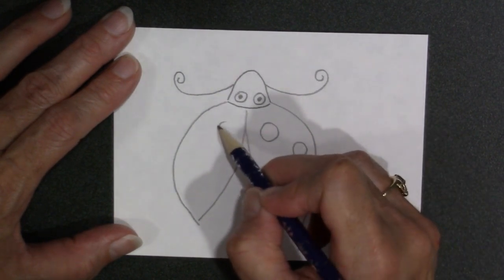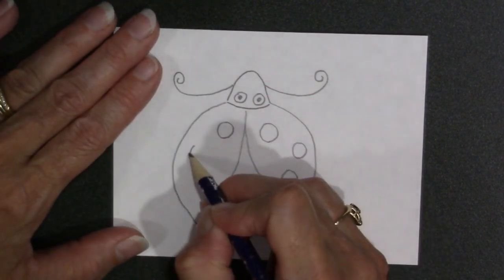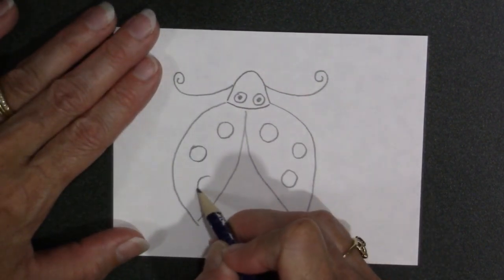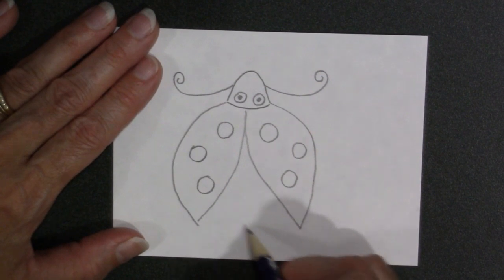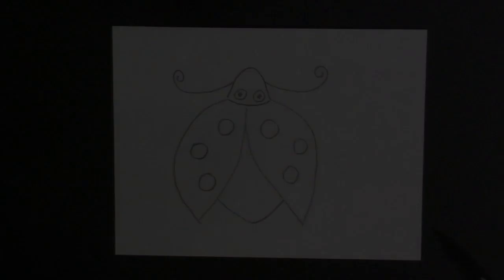And connect the two wings with just a little bit rounded v-shape that's going to be colored and solid. And there's your ladybug.